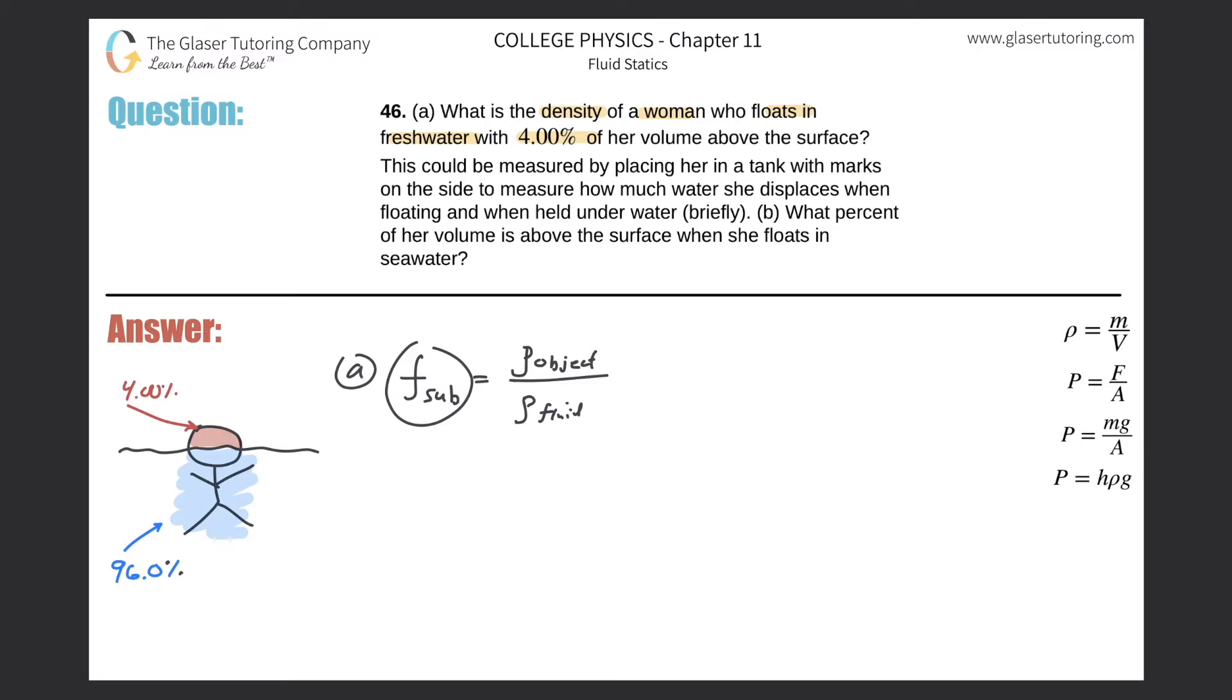the fraction submerged would be the amount or the percentage of the fraction basically of the item or the object that is below or beneath the level of the fluid. So that's our 96%. Now this is talking about a fraction. So we're going to leave it in decimal term when we do our calculation. So it's 0.96.